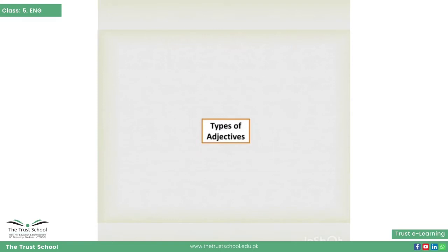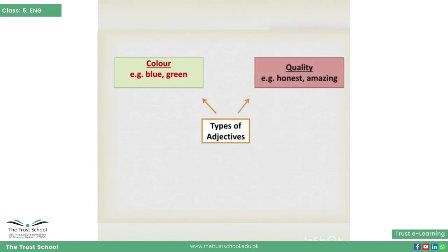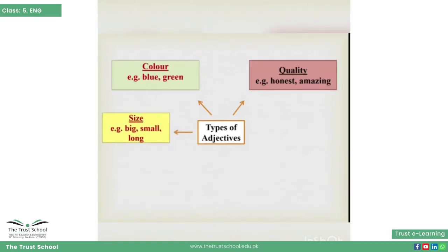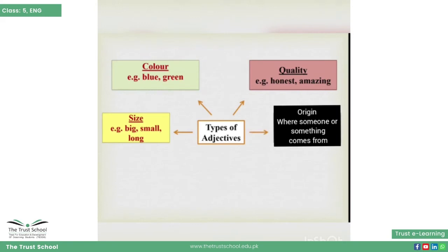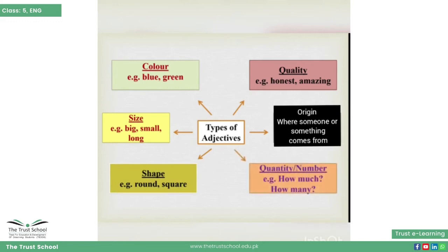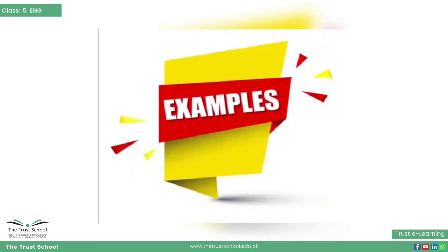Now let's discuss types of adjectives. Adjective ka istamal karte hue hum kisi cheez ke color ke baare mein bata sakti hain. Iske saath hi hum kisi cheez ki quality, size, aur origin ke baare mein bhi bata sakti hain — kisi cheez ya shaks ka talluq kahan se hai. Hum shape aur quantity ke baare mein bhi bata sakti hain.